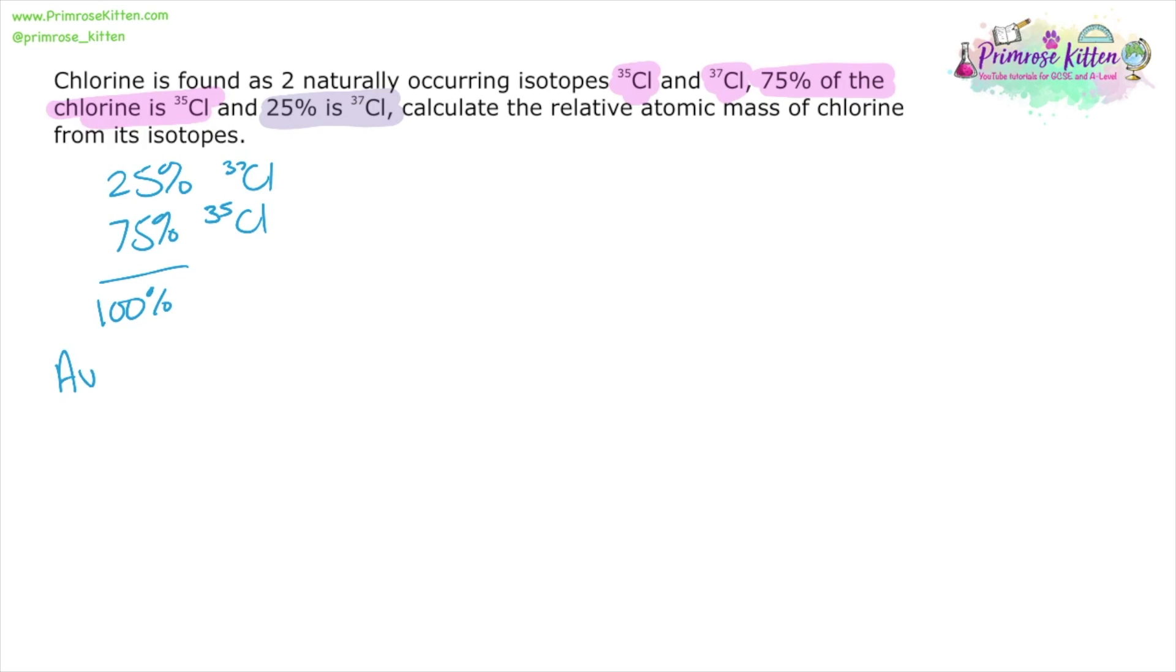And these add up to 100%. That makes our lives nice and easy because what we are actually looking for is the average mass of these. And we can say we're looking for the average mass of 100 atoms. So we had 100 atoms and 25 of them weighed 37 and 75 of them weighed 35.